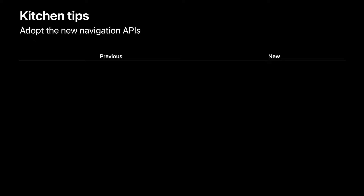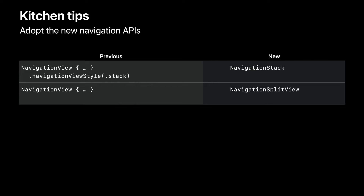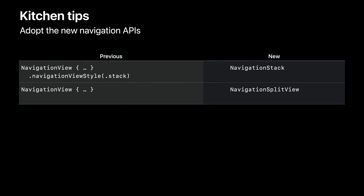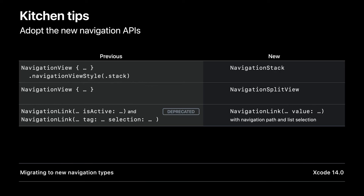No cookbook would be complete without handy kitchen tips. Switch to the new NavigationStack and NavigationSplitView as soon as you can. If you're using NavigationView with the Stack style, switch to NavigationStack. NavigationStack is also a good first choice on Apple TV, Apple Watch, or in Sheets on iPad and iPhone. If you're using a multi-column NavigationView, switch to NavigationSplitView. And if you've already adopted programmatic navigation using the links that take bindings, I strongly encourage you to move to the new value-presenting NavigationLink, along with NavigationPath and list selection. The old-style programmatic links are deprecated beginning in iOS 16 and aligned releases. For details on migrating, check out the article Migrating to New Navigation Types in the developer documentation.